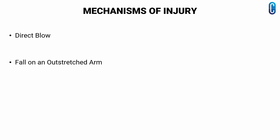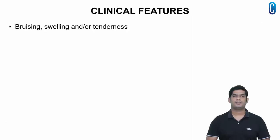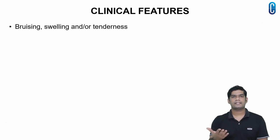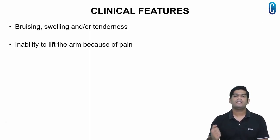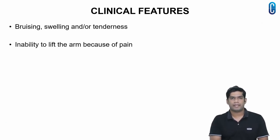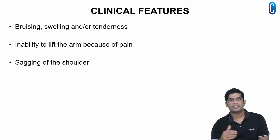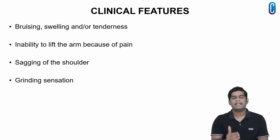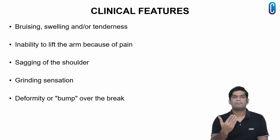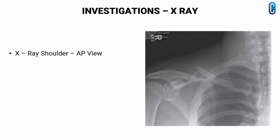We will now see the mechanisms of injury. The clavicle is one of the most frequently fractured bones in the body, and the fracture most often results from a direct blow or a fall on an outstretched arm. The clinical features include bruising, swelling or tenderness over the clavicle, inability to lift the arm because of pain, sagging of the shoulder downward and forward, and a grinding sensation when you try to raise the arm and a deformity or bump over the area.